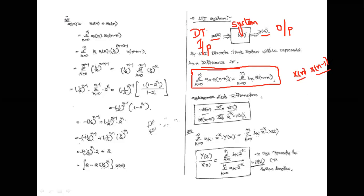The left-hand side terms include y(n), the present output, and y(n-1), the past output. The system does not depend at all upon future inputs or future outputs — only on the present and past inputs, and the present and past outputs.